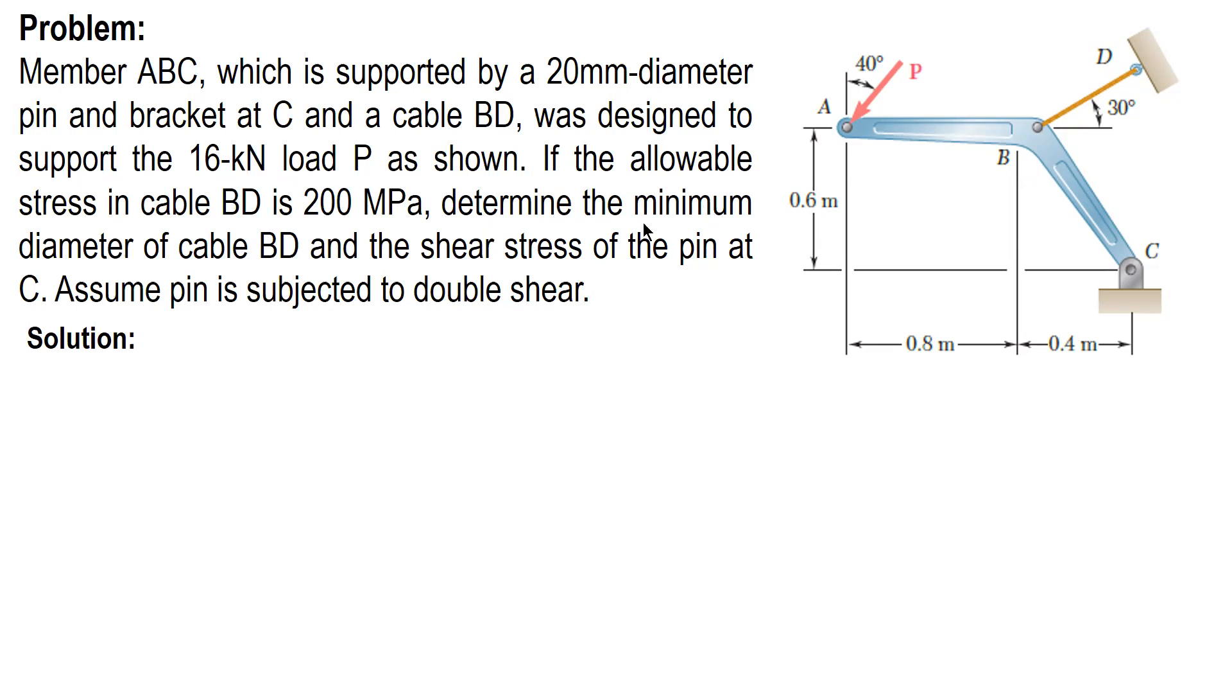So first, if we determine the diameter of cable BD. For BD, the stress is already given, allowable stress 200 MPa. To solve for its diameter, we need to find the force in cable BD. And then for the shear stress of the pin at C, we need to find the force or the reaction at C. Since the diameter is already given, 20 millimeters. So, to do this, first, we need to determine the force in cable BD.